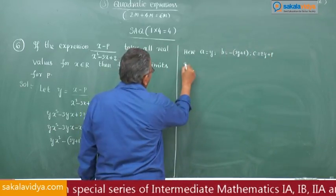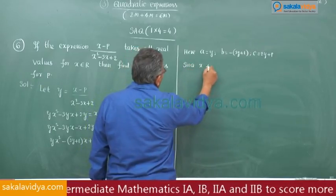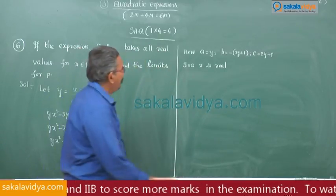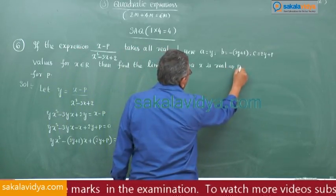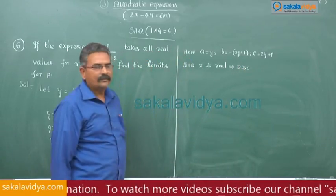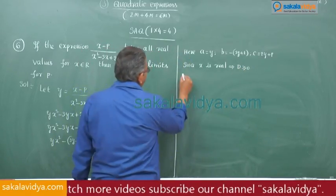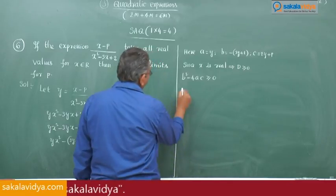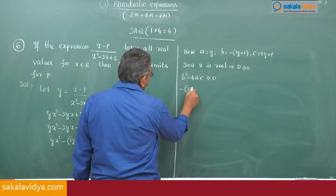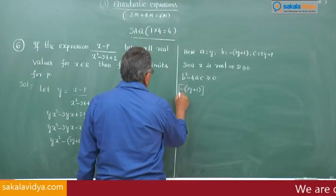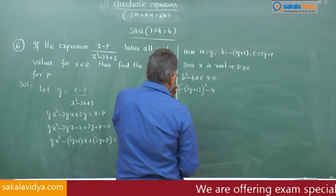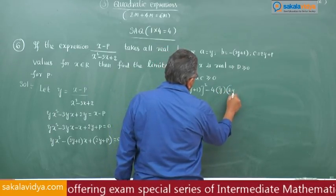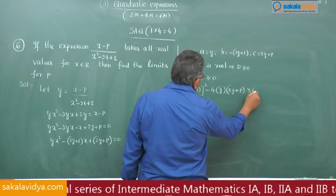Since x is real, the discriminant D must be greater than or equal to 0. So B squared minus 4AC greater than or equal to 0: minus(3y plus 1) whole squared minus 4 times y times (2y plus p) greater than or equal to 0.